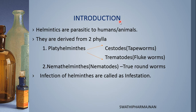Coming to introduction, helminthics are parasitic to both humans and animals. They are derived from two phyla. The first phyla is Platyhelminthes and the second one is Nematihelminthes, which are also called as nematodes.